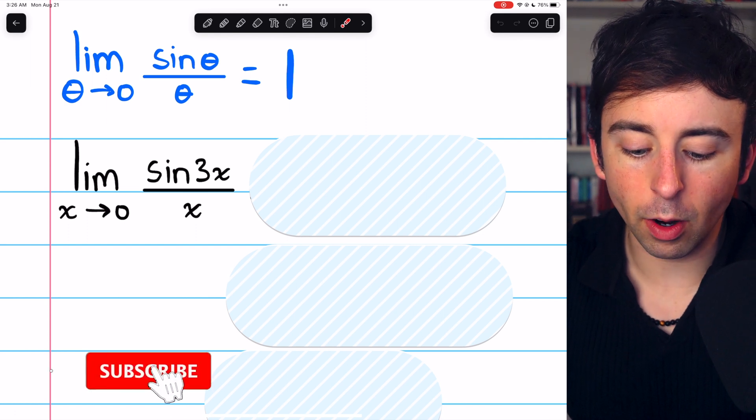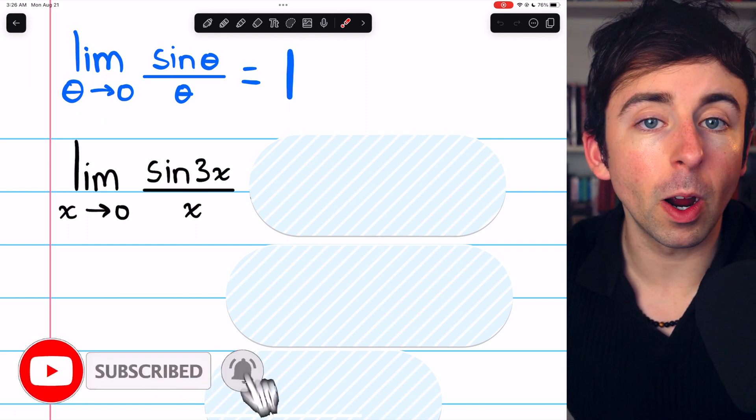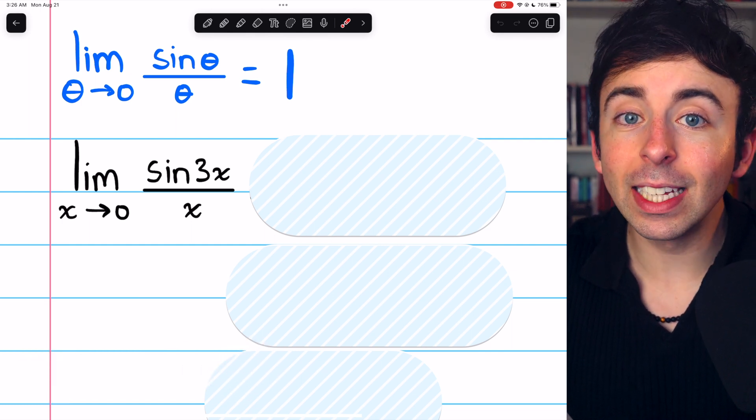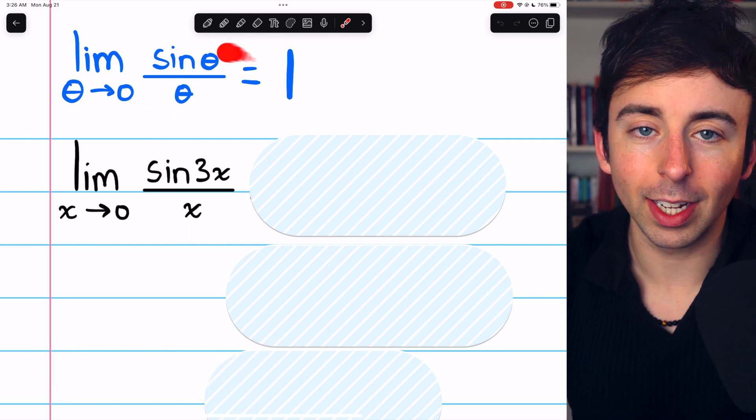You should know that the limit of sine theta over theta as theta approaches 0 is 1. This is a famous trig limit that we use a lot. Link in the description to my lesson proving this fact.